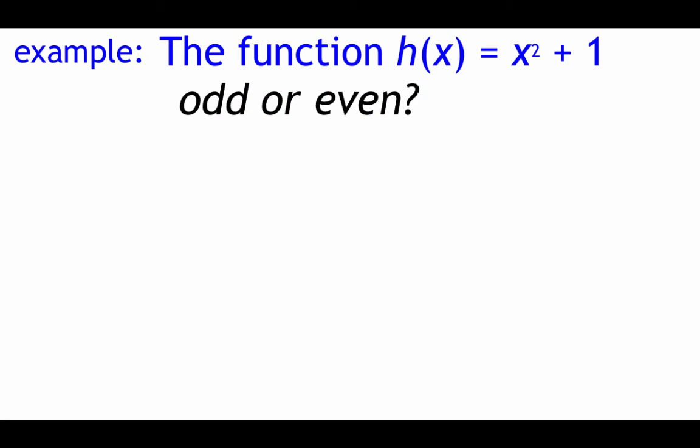I'm going to run through two examples, but feel free to pause the video at any time and try these out on your own. We're looking at this function h of x equals x squared plus 1, and we're going to check if it's odd or even. So we're going to plug in that negative x. We're going to look at h of negative x. If we get back our original function, it's going to be even. If we get back the opposite of our original function, then it'll be odd. If we get back something completely different, then it's neither.